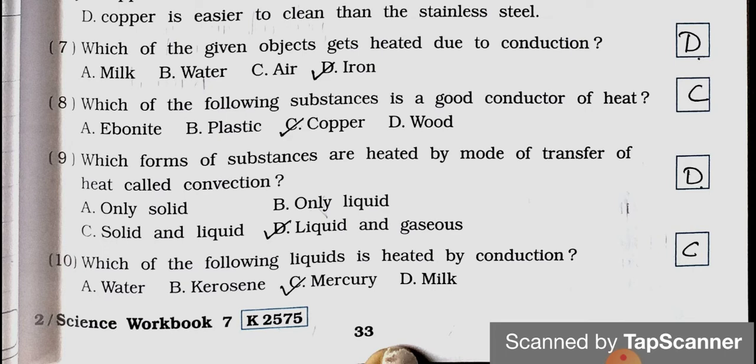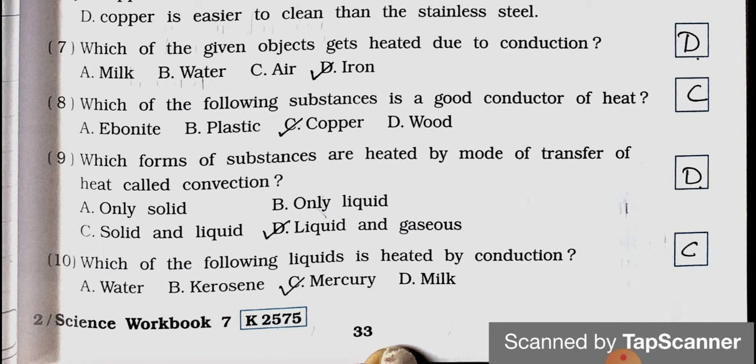Number 8: Which of the following substances is a good conductor of heat? A. ebonite, B. plastic, C. copper, and D. wood. Answer is option C, copper. Number 9: Which forms of substance are heated by mode of transfer of heat called convection? A. only solid, B. only liquid, C. solid and liquid, and D. liquid and gaseous. Answer is option D, liquid and gaseous. Number 10: Which of the following liquids is heated by conduction? A. water, B. kerosene, C. mercury, and D. milk. Answer is option C, mercury.